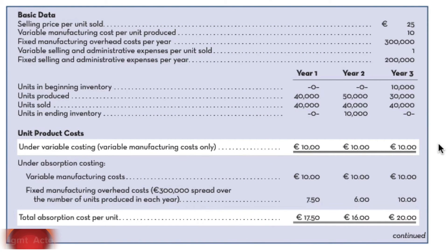In our first example, we looked at the difference between absorption costing and variable costing when sales change but production stayed the same. Now we're going to look at it under a different condition — I think once we see this, you're going to see the power of variable costing over absorption costing. We're going to look at the two — variable costing and absorption costing — as sales stay the same but production changes. In the first example, production stayed the same each year and sales changed. In this example, sales will stay the same each year, but production will change.